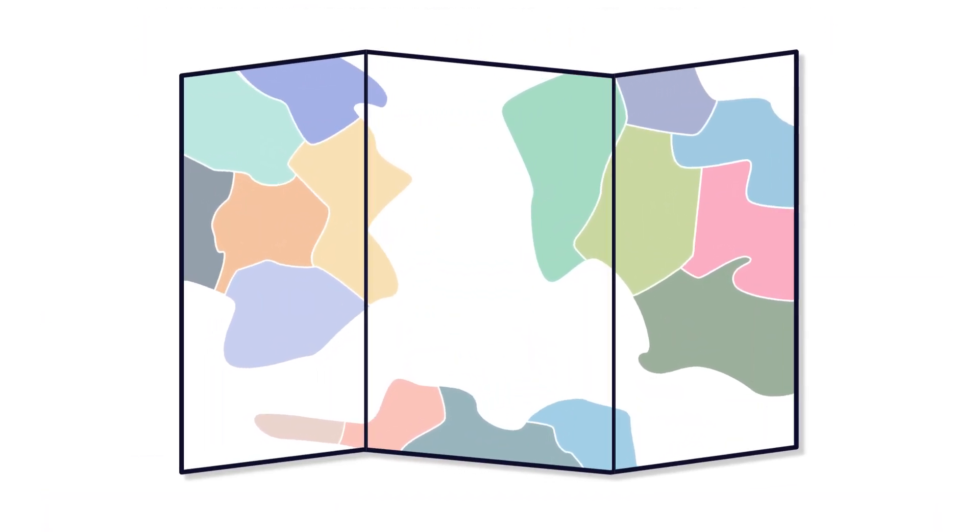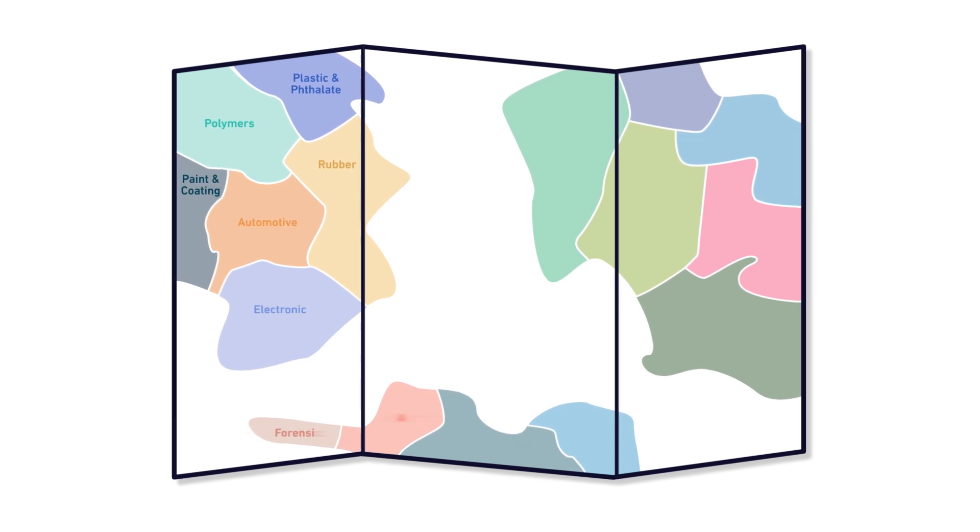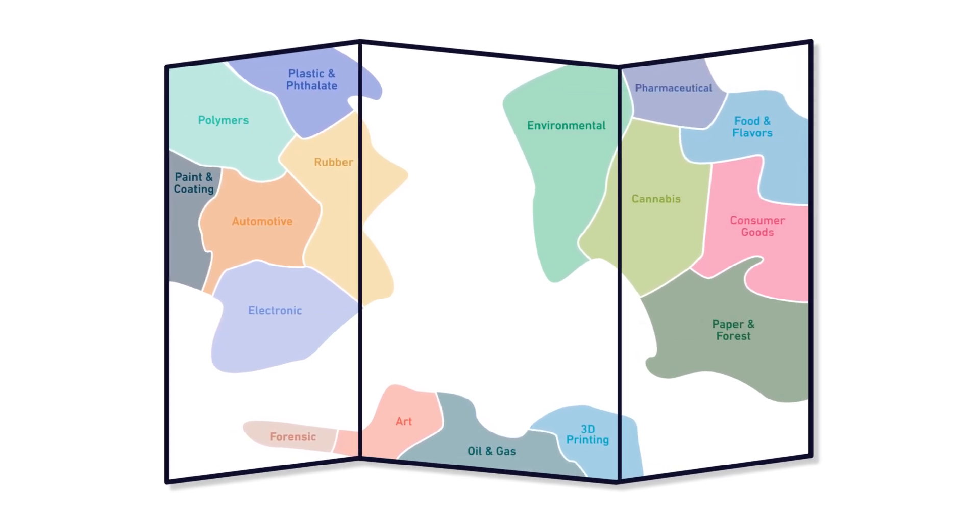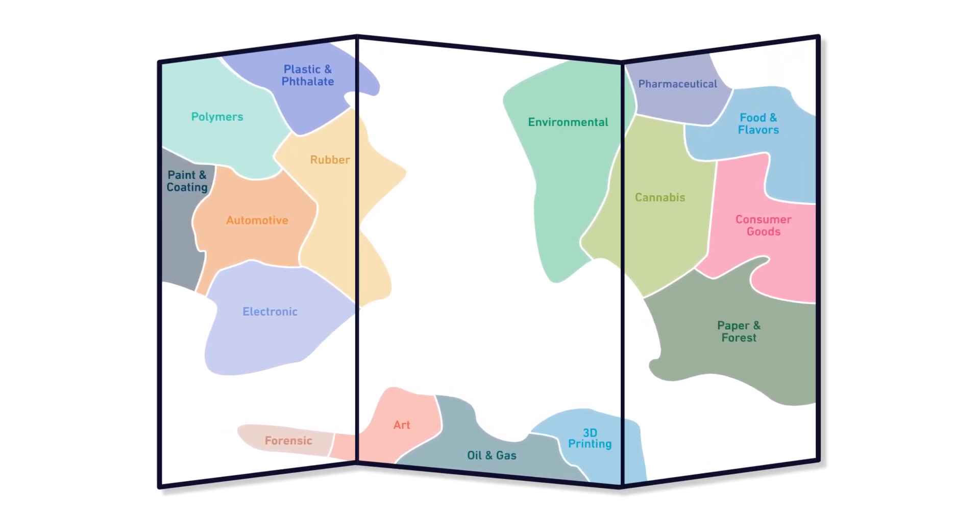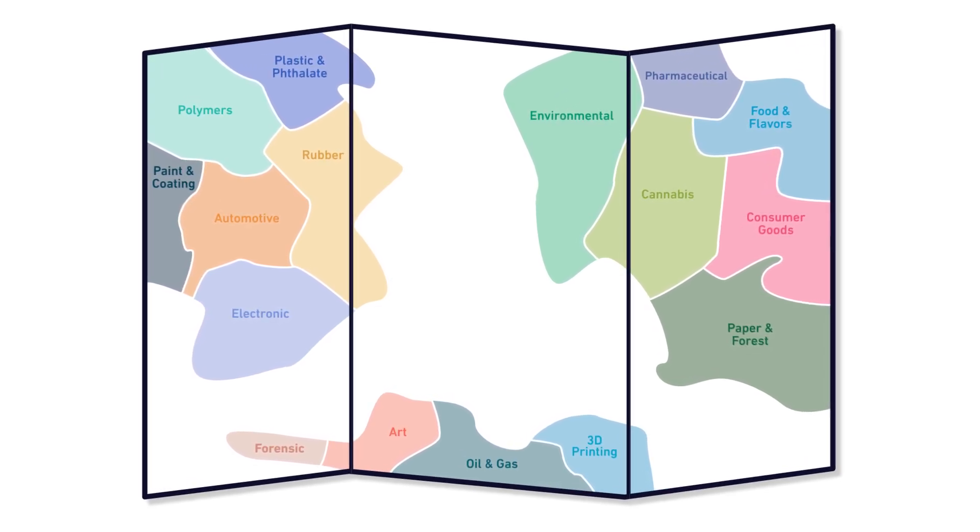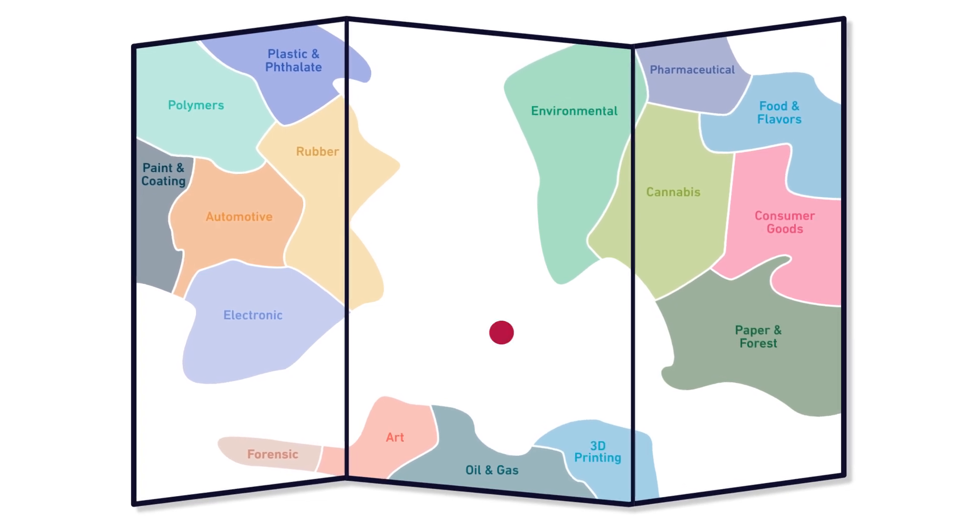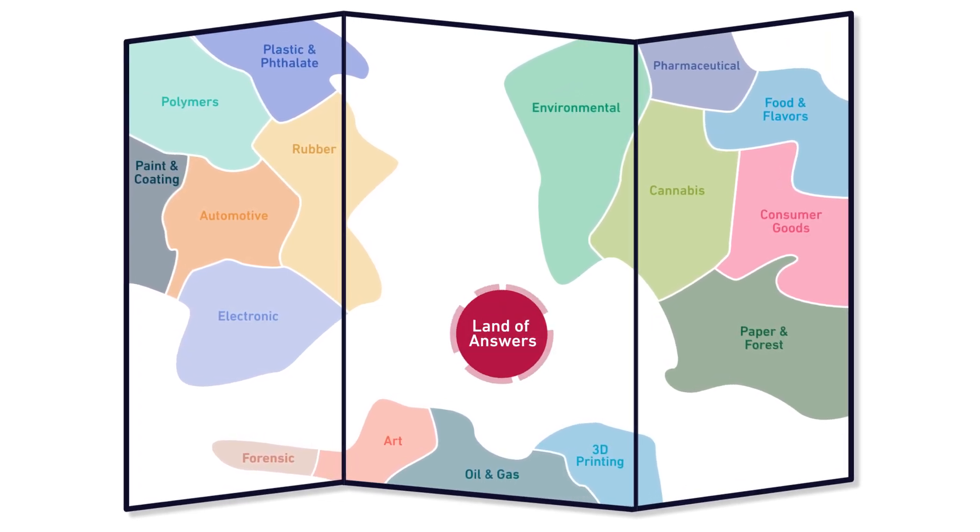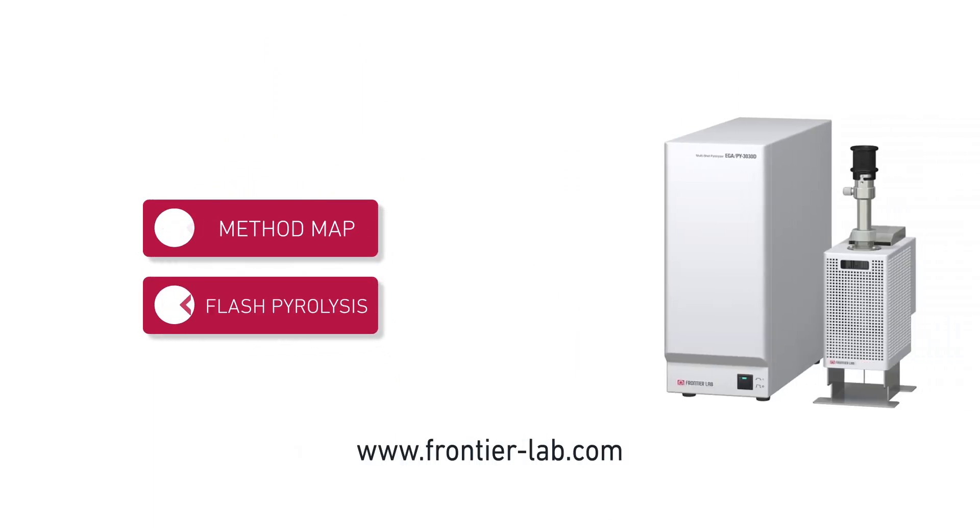And remember, no matter where your analytical home country is, the method map, EGA, single shot, double shot, heart-cutting, and other capabilities of the vertical micro-furnace technology will guide you to the land of answers efficiently and effectively. To learn more about the Multi-Mode Micro-Furnace Pyrolyzer and how it can add value to your analytical protocols, simply connect with us.